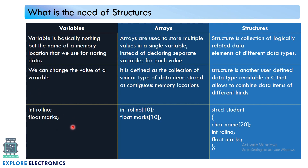Now say we have to store the data of 10 students. We would need to create 10 different variables for each field — that means for role number we need 10 role number variables. Similarly for marks we need another 10 variables, so totally we need 20 variables if we declare them like this.